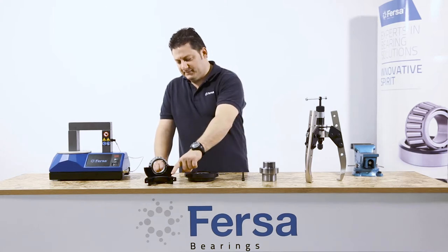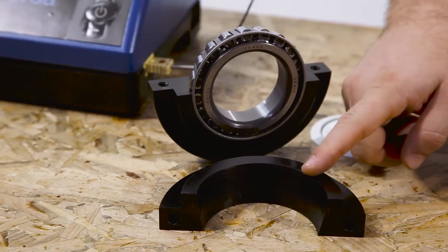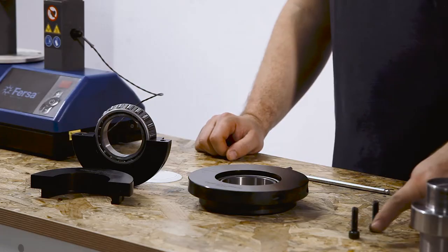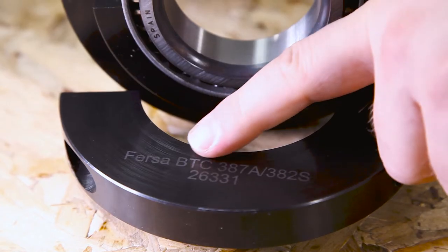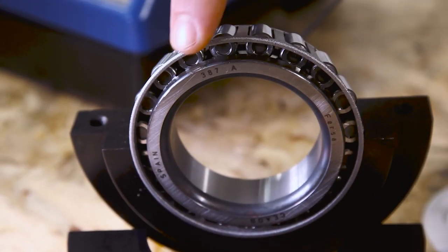The tool is specially designed for the requirements of each application. It consists of two metal clamps joined by two screws. We will choose the tool number that matches the part number of the bearing that we are going to extract.